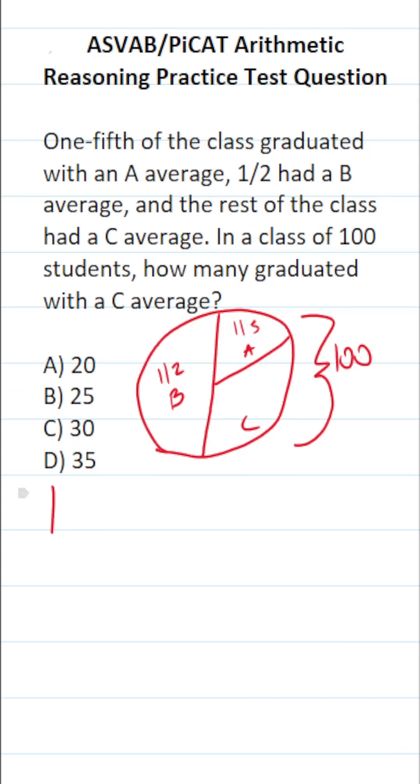This pie chart represents one minus the one-half of the class that graduated with a B average minus the one-fifth of the class that graduated with an A average. By doing this math, we'll determine the fraction of the class that graduated with a C average.